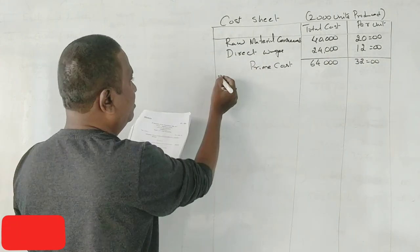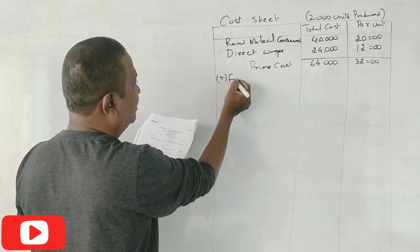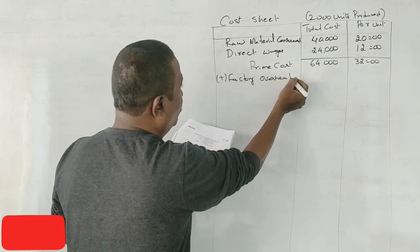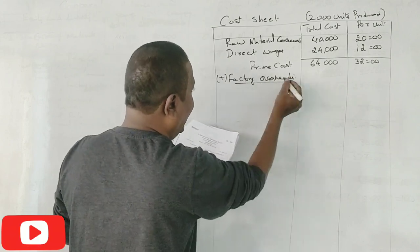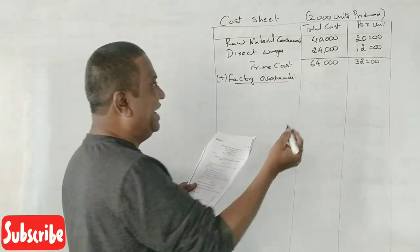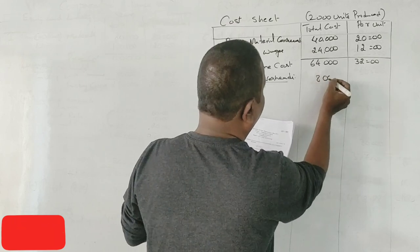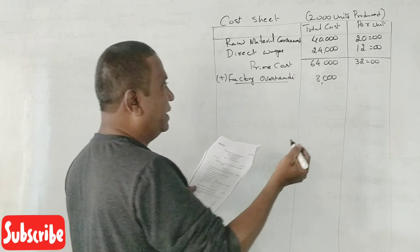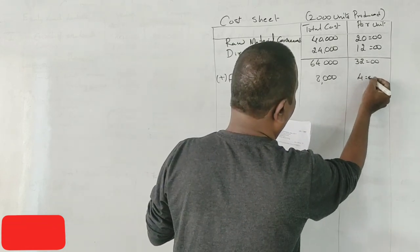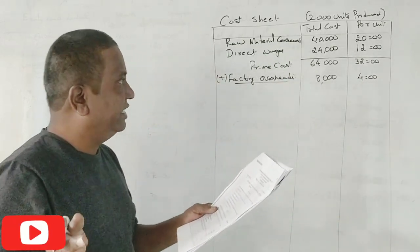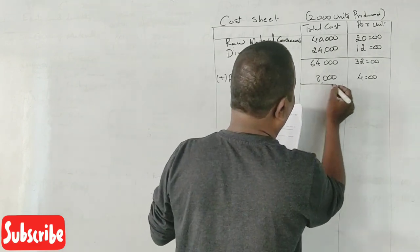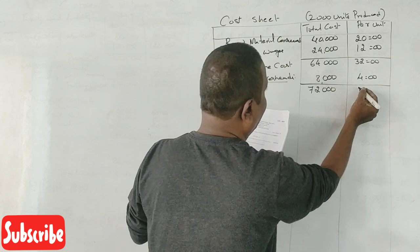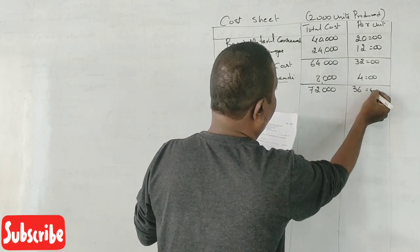What is to add? Very good, now you are on track. Factory overheads means factory expenses. It is clearly given 8,000 rupees. If 8,000 you paid for 2000 units to manufacture, per unit will be 4 rupees. It comes to 72,000 and 36 rupees per unit.